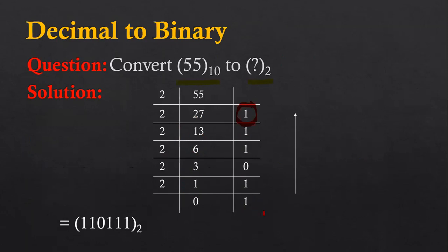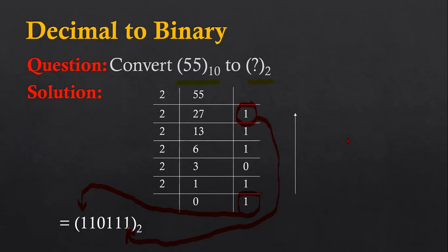Now we pick all these digits from bottom to up. The result is 1, 1, 0, 1, 1, 1 — so the binary result is 110111. The topmost one is the most significant digit. Remember: whenever you convert decimal into binary, divide the number by two, record all the remainder values, and put all the remainder values from bottom to up. That will be the equivalent binary number. This is how I converted decimal number 55 into binary 110111.